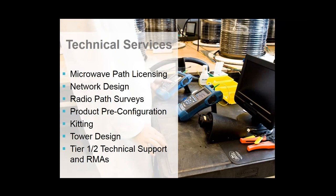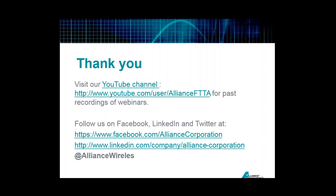Some of the technical services that we offer our partners include microwave path licensing, network design, surveying, and kitting so all the material shows up on site at the same time. We also provide tier one and tier two support. Look us up online, our social media feeds, or reach out to your local Alliance account manager.